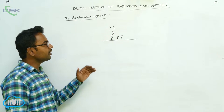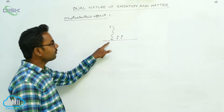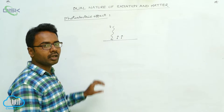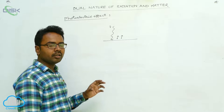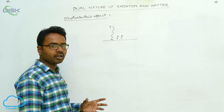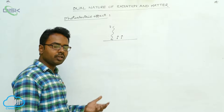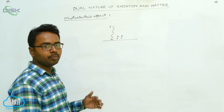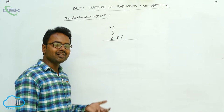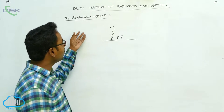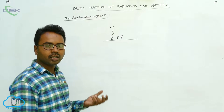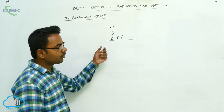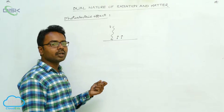This is called the photoelectric effect. In this phenomenon, light is supposed to consist of particles called photons. Phenomena like reflection, refraction, interference, diffraction, and polarization can be explained on the basis of the wave nature of light. However, the photoelectric effect and the Compton effect can be explained on the basis of the particle nature of light only.